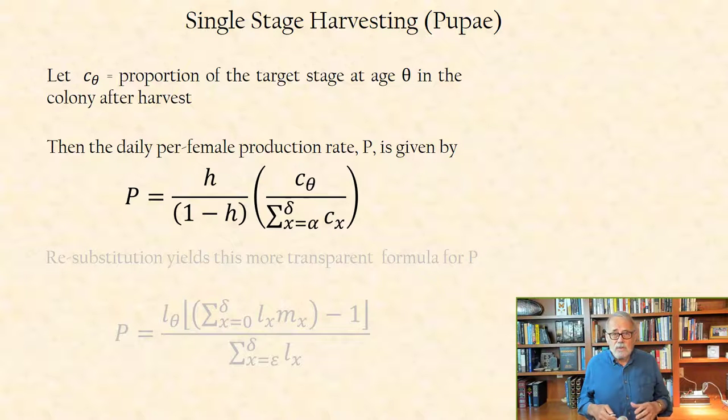This number requires doubling, that is, 2P, if males need to be accounted for, and the assumption of a 1-to-1 sex ratio is valid.